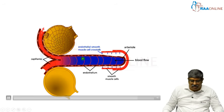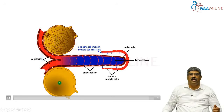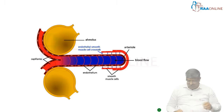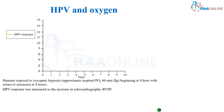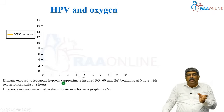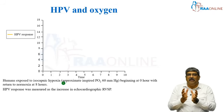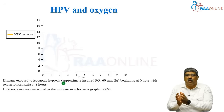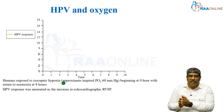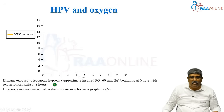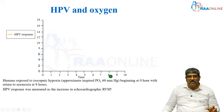Because there is hypoxia, no blood flow goes there; all the blood is diverted towards the normal alveoli. Coming to the hypoxic pulmonary vasoconstriction response to hypoxia — in this graph, humans are exposed to isocapnic hypoxia at a PO2 of less than 60 mmHg and are returned to normoxia after 8 hours.